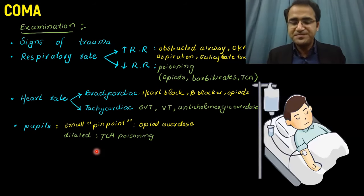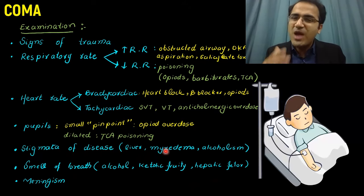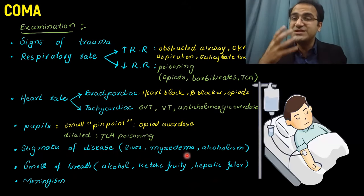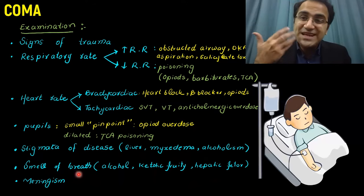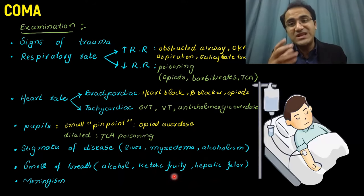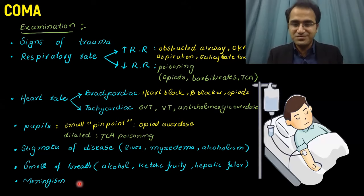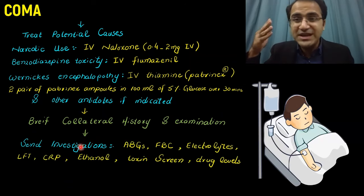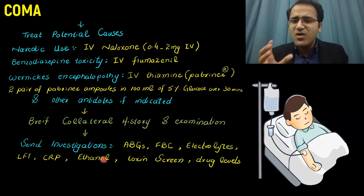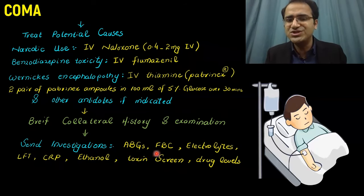Look for stigmata of disease: signs of liver disease like severe ascites, signs of hypothyroidism such as loss of hair and myxedema, and signs of alcoholism. The smell of breath can indicate alcohol intoxication; a ketotic fruity smell is seen in DKA patients; hepatic fetor indicates hepatic failure. Look for signs of meningitis. Treat the potential causes, take collateral history and examination, and then send investigations to dive deeper into the cause of coma.